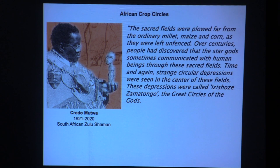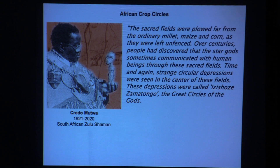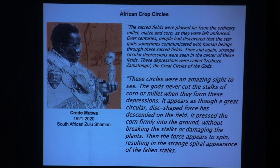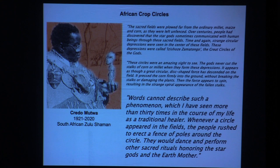Credo Mutwa — think of him as like the Dalai Lama of the Zulu tribe — was a very esteemed and respected healer. He assures us that these have happened for generations. Over centuries, people had discovered that the star gods sometimes communicated with human beings through these sacred fields. They were called the great circles of the gods. They never cut the stalks of corn or millet. A great circular disc-shaped force descended on the field, pressing the corn firmly into the ground without breaking the stalks, then appeared to spin, resulting in a strange spiral appearance. He says he's seen this more than 30 times, and people would rush to erect a fence of poles, treating it as a sacred place, dancing and performing rituals honoring the star gods and the earth mother.